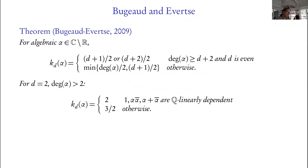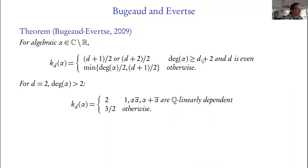Bugeaud and Teulié have a 2009 paper with wonderful results about approximation of numbers in the complex plane by algebraic numbers. Suppose we take an algebraic number α in the complex plane but not in the reals. The question is: what is this Koсhma exponent? It breaks into cases. If d is even and the degree of α is bigger than d, there are two possibilities — the generic one, or something different. If d is odd, again it depends on whether the degree of α or d is larger.